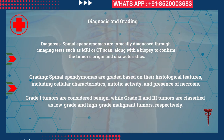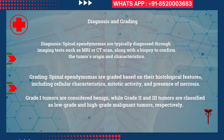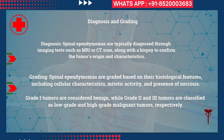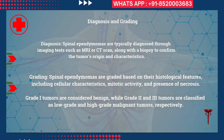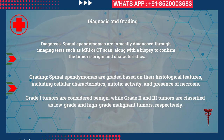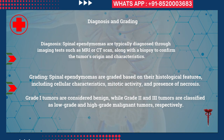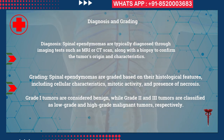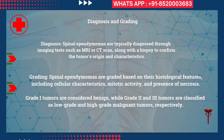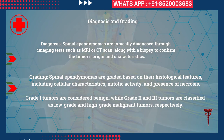How do you grade spinal ependymomas? They are graded based on histological features including cellular characteristics, mitotic activity, and presence of necrosis. Grade 1 tumors are considered benign, while grade 2 and grade 3 tumors are classified as low-grade and high-grade malignant tumors, respectively.